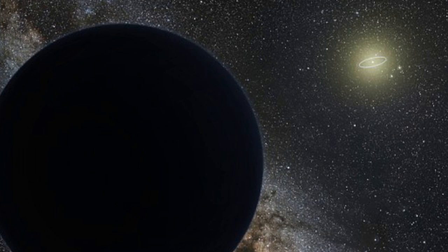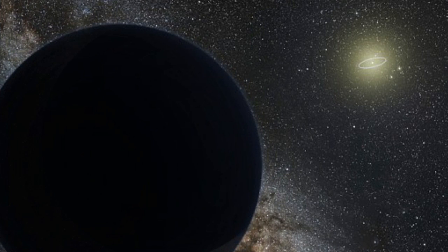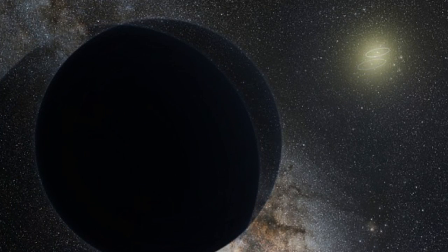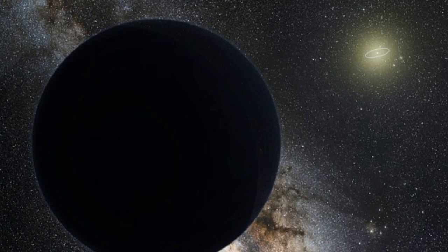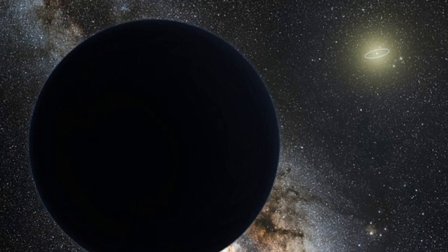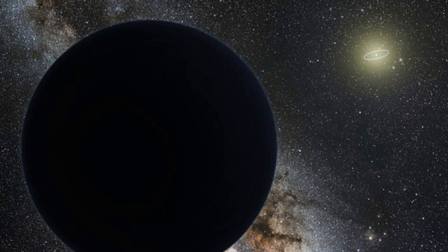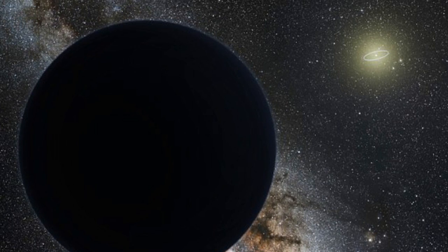They found the new minor planet, which they have named NIKU after the Chinese for rebellious, which seems to be part of a cluster of other similar objects and icy planetoids with similar orbits. It suggests they may have been pushed or pulled into this strange orbit by something far larger orbiting beyond Neptune.